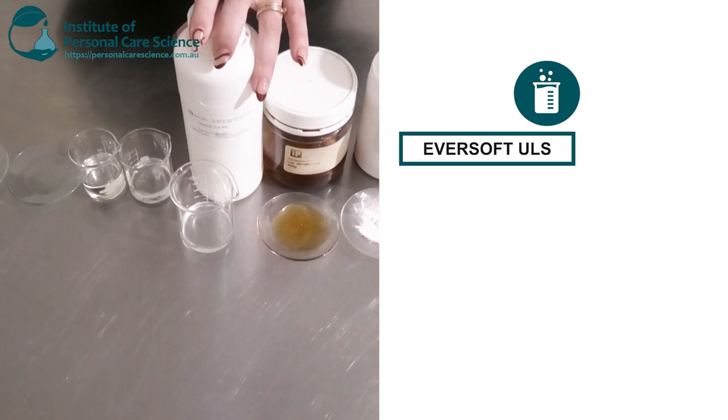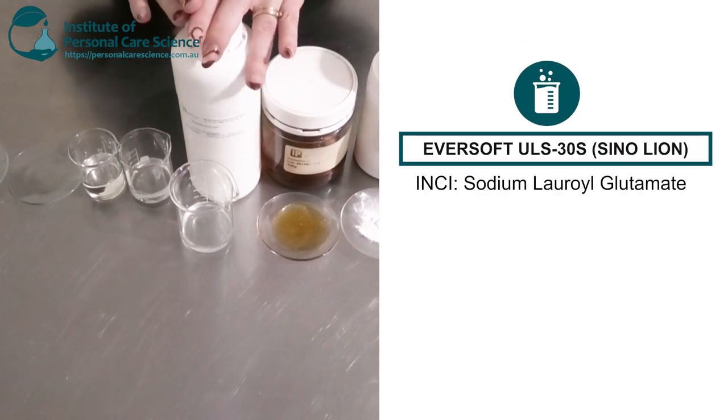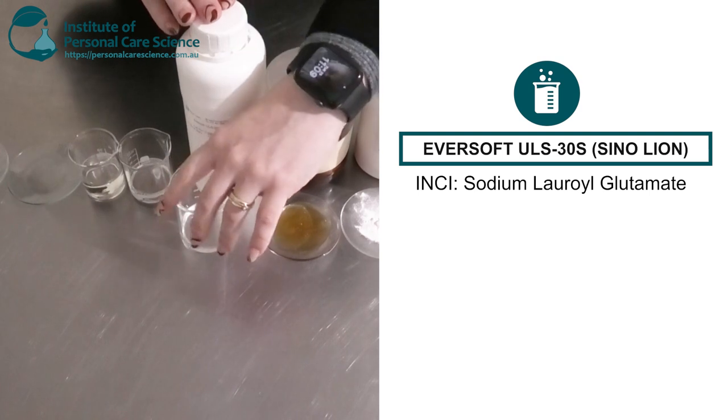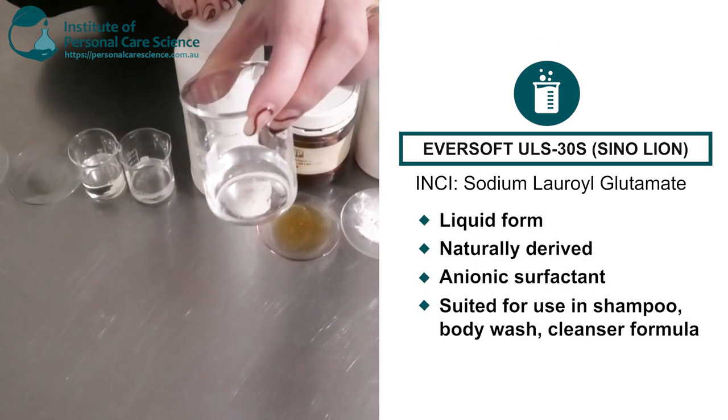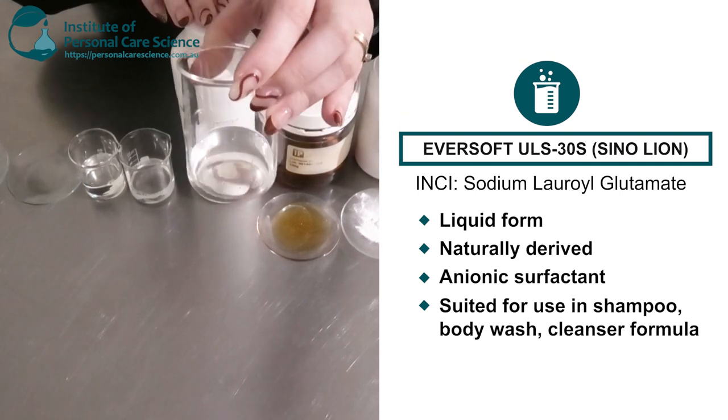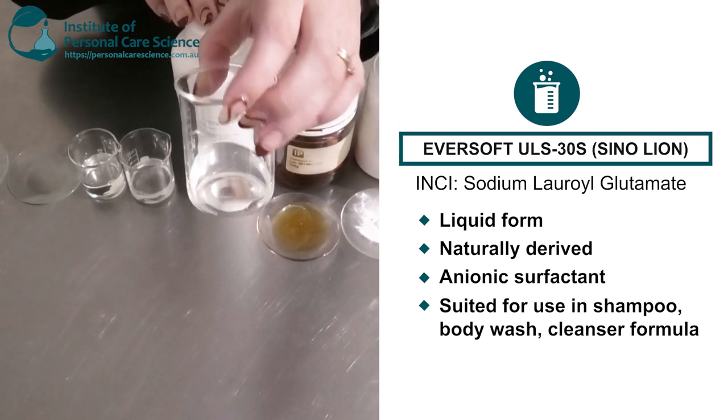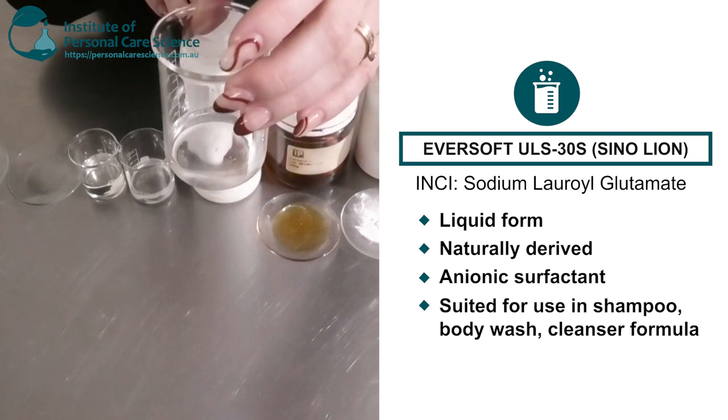Next I have the Eversoft ULS30S. Now this is a naturally derived surfactant. So this is sodium lauryl glutamate and this is perfect for obviously your natural or naturally derived products. Perfect for shampoos, cleansers and also body washes and this is quite a clear liquid.